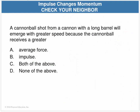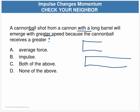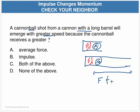Consider a cannonball shot from a cannon with a long barrel versus a short barrel, with the same amount of gunpowder in each. In the long barrel, the force acts for a very long time, so the impulse — force times time — is large. In the short barrel, the force acts for a very short time, so the impulse is smaller. Therefore, a longer barrel produces a greater speed.